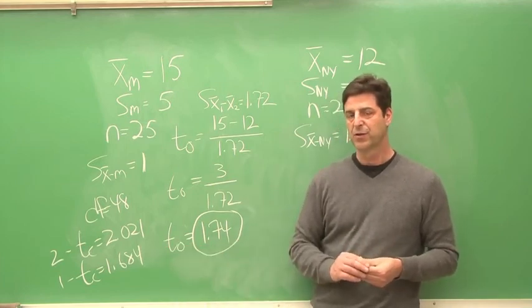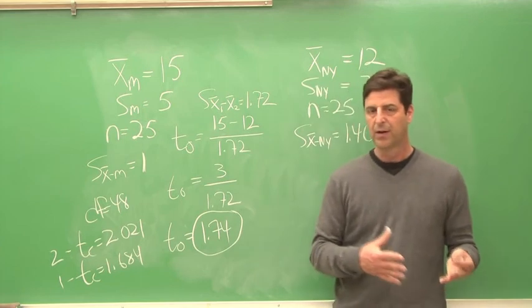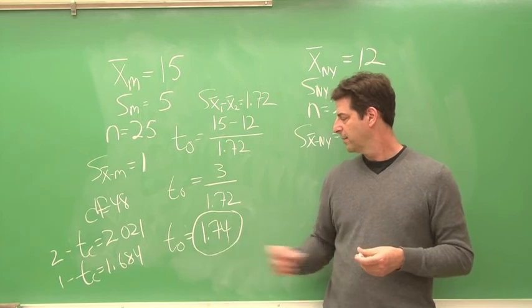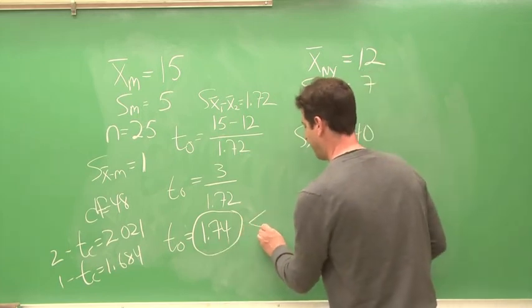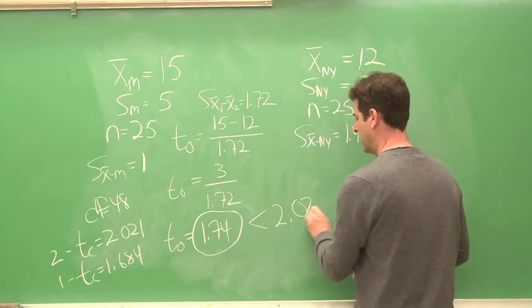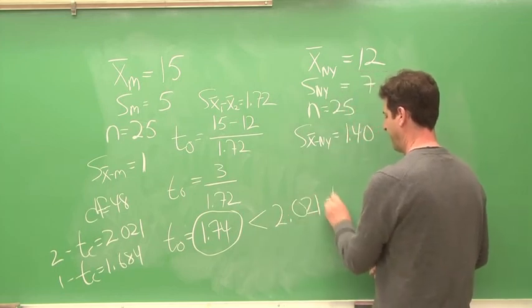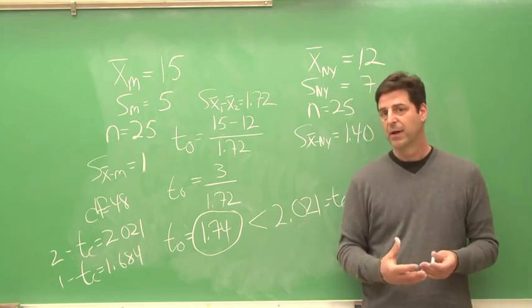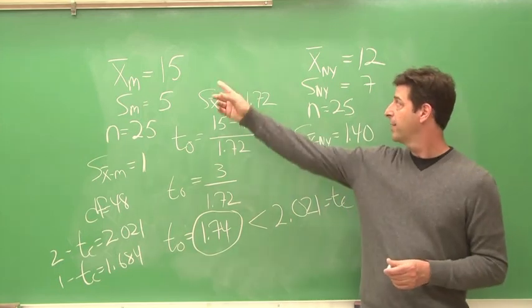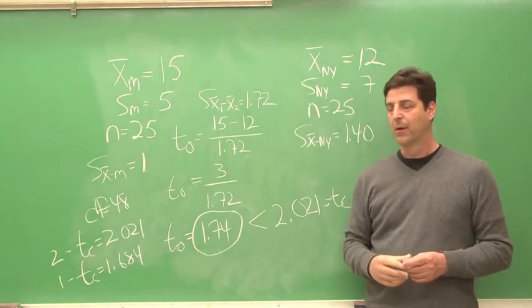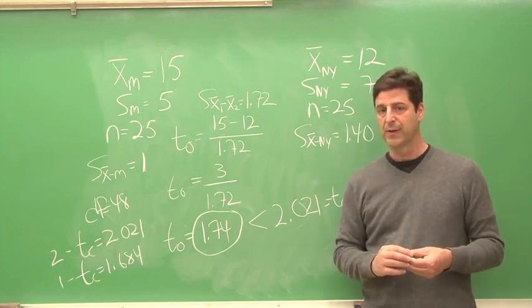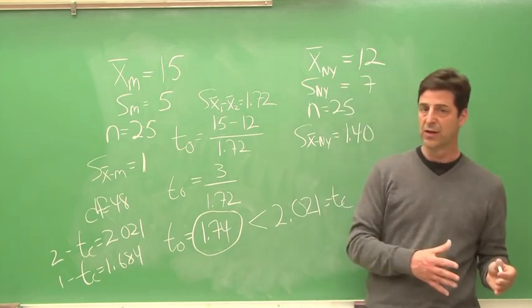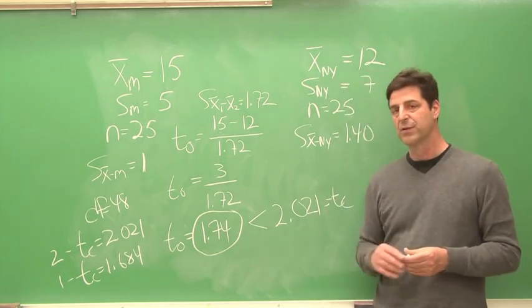Let's say that this is a two-tailed research question. Is there a difference in the water quality of Michigan lakes compared to New York lakes? Our observed T value here is less than our critical T value. And we would conclude that our result is not statistically significant. Although there is a difference in the sample means, we are not prepared to conclude that there is a difference between the population means of water quality of New York State lakes and Michigan lakes because our results were not statistically significant.